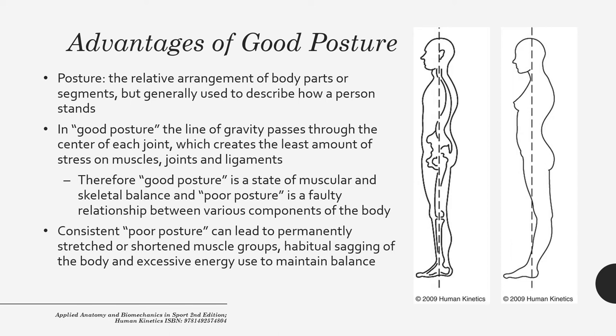Good posture also means we're in a state of muscular and skeletal balance. Poor posture creates a faulty relationship between these components. Consistently poor posture can lead to permanently stretched or shortened muscle groups, habitual sagging of the body, and excessive energy use to maintain balance. Put simply, poor posture actually hurts our body.